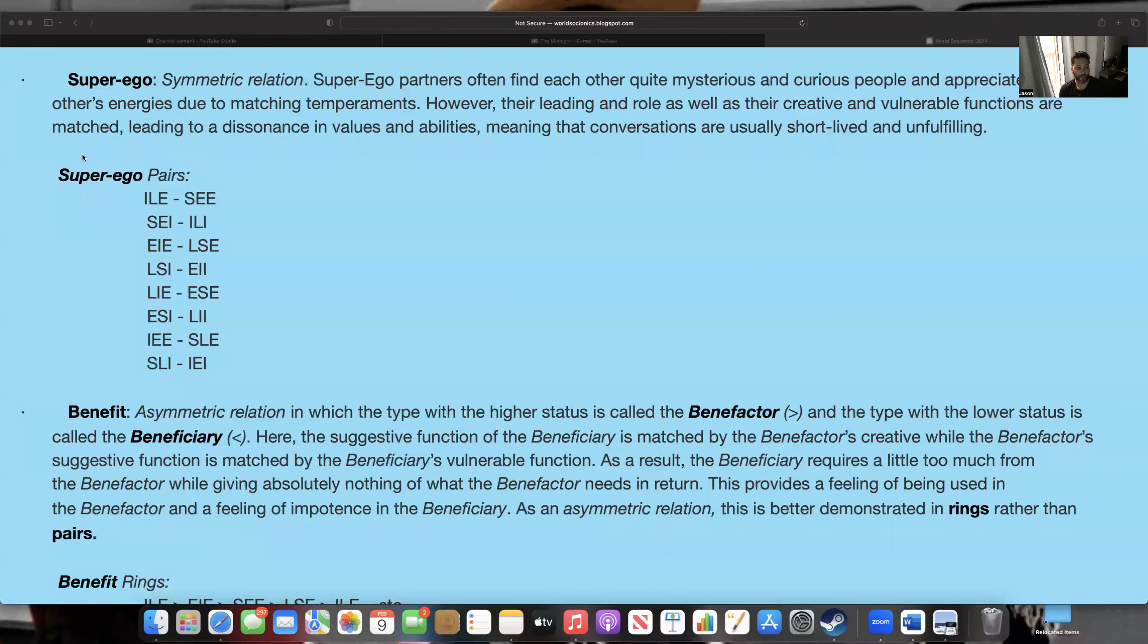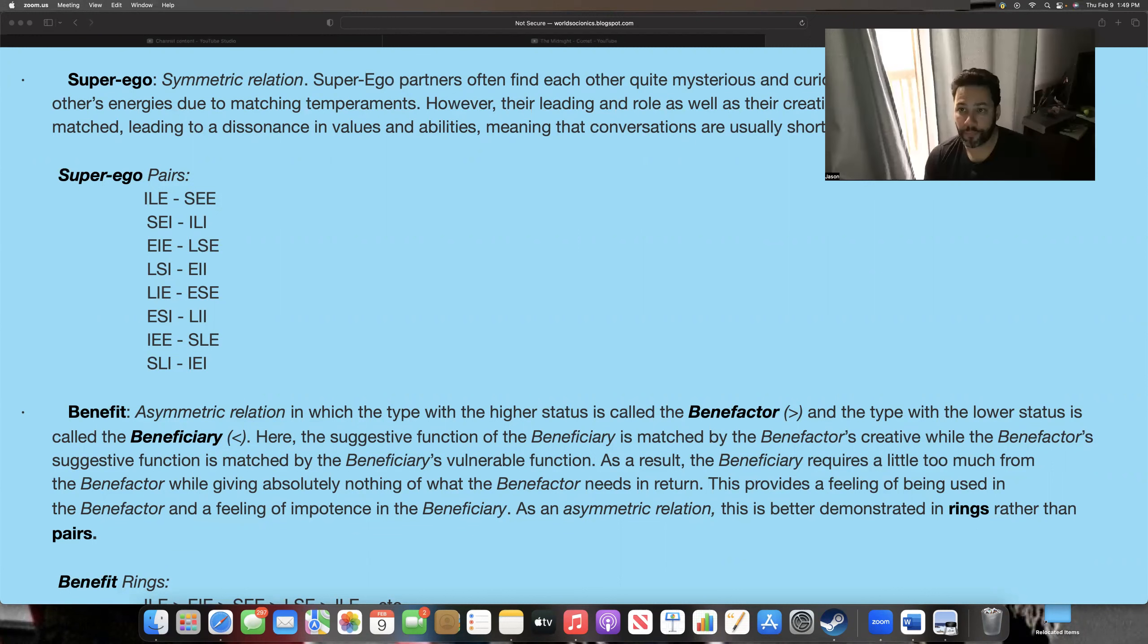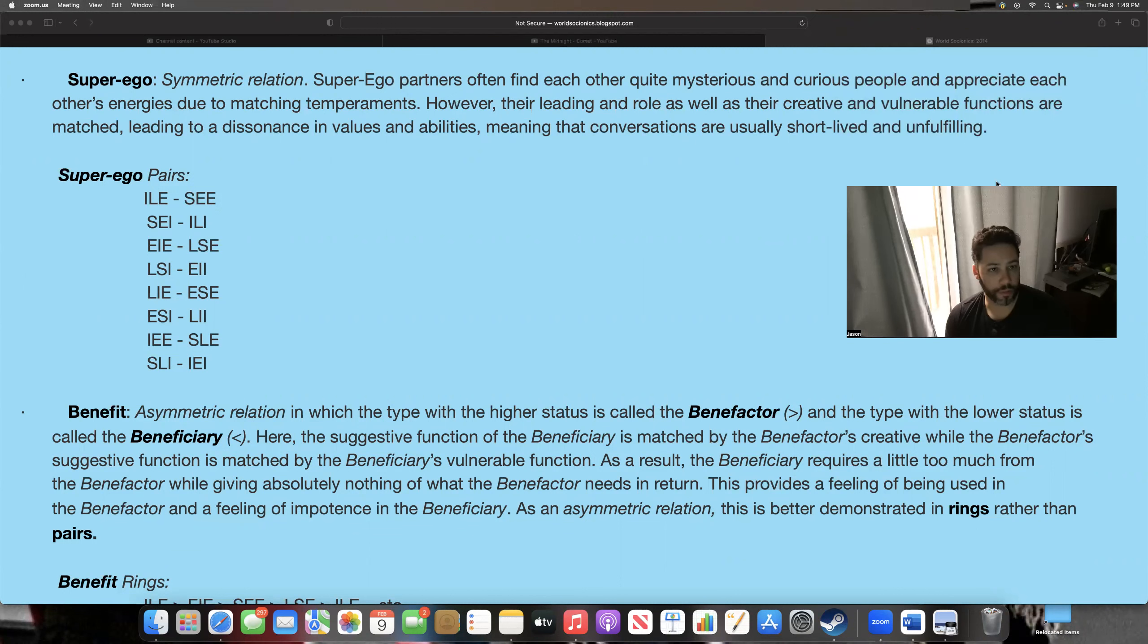So we're talking super ego. Let's do a little screen share again. Super ego pairs - here are the pairs, all different types that are going on right here. There I am, LIE and ESE, so this would be your ESFJ and ENTJ. This in a nutshell is me talking to my mother constantly.